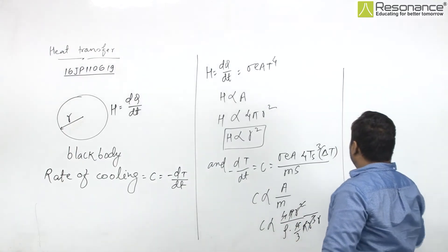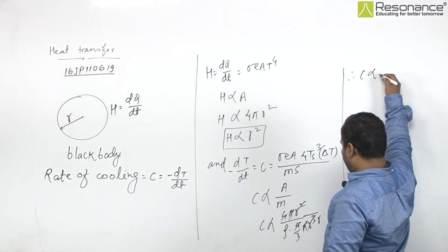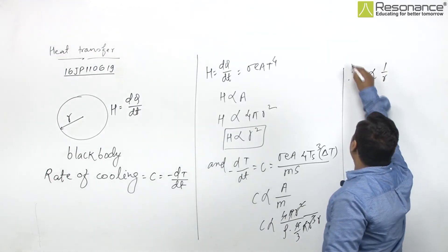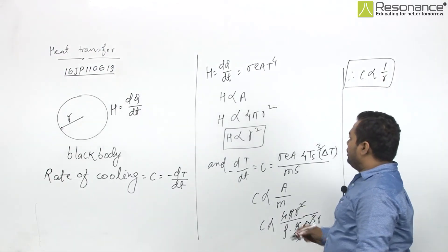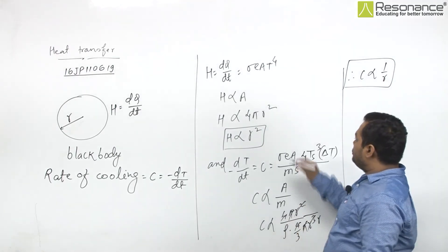This R squared gets cancelled by R, 4 pi and 4 pi gets cancelled. So from here, C is proportional to 1 upon R.